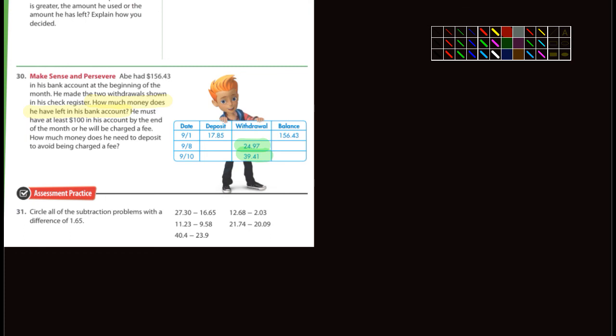Looks like there might be more than one question. He must have at least $100 in his account by the end of the month or he will be charged a fee. How much money does he need to deposit to avoid being charged a fee? So that tells me right there that what is subtracted from his account, when you add these two up and subtract it from 156.43, he is going to have less than a hundred dollars. And the second question is to figure out how much money he would have to add back in to have at least a hundred dollars. I'll let you guys figure that one out.